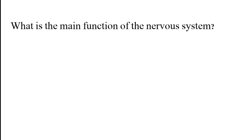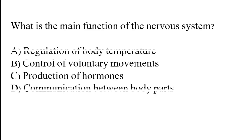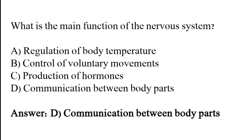What is the main function of the nervous system? Options: Regulation of body temperature, control of voluntary movements, production of hormones, communication between body parts. The correct answer is option D. The main function of the nervous system is communication between body parts.